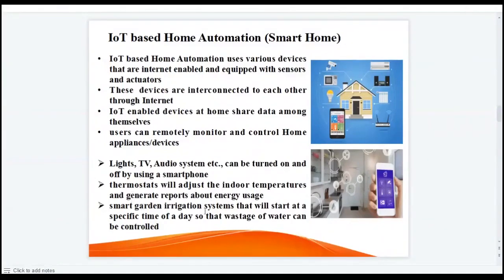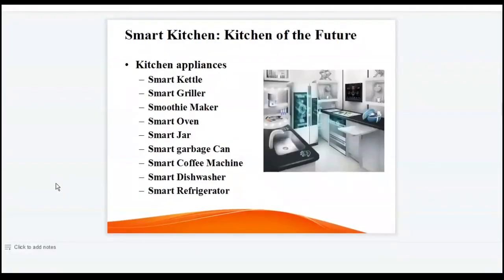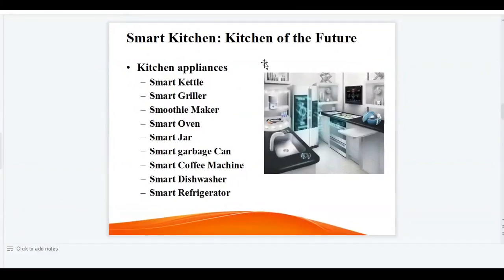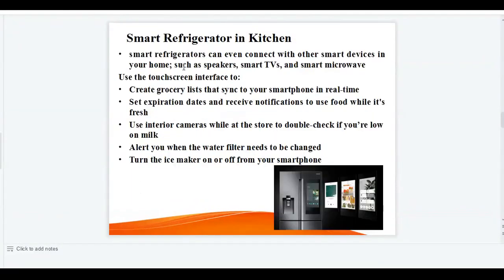A smart garden irrigation system can start at a specific time of day so that wastage of water can be controlled. As you watch this video, the Internet of Things is already heading to your kitchen. The kitchen of the future is utilizing the idea of Internet of Things, and the consumer electronics industry has already started developing smart kitchen appliances — for example, a smart kettle, smart griller, and smart refrigerator. Now let's have a look at the smart refrigerator in the kitchen.